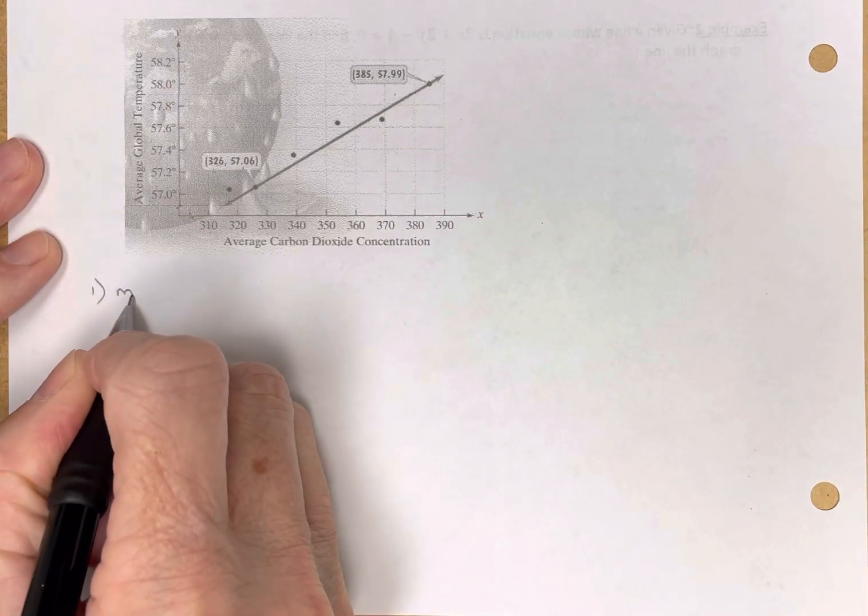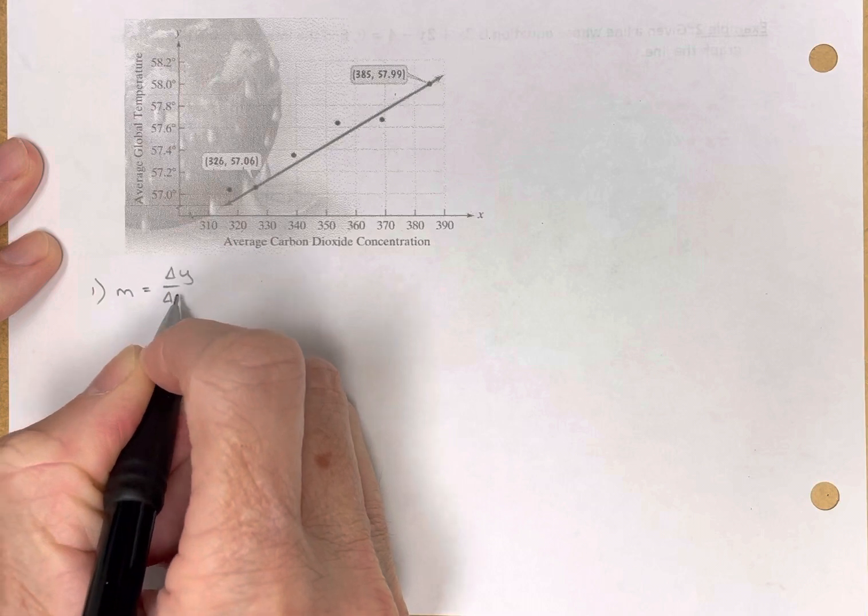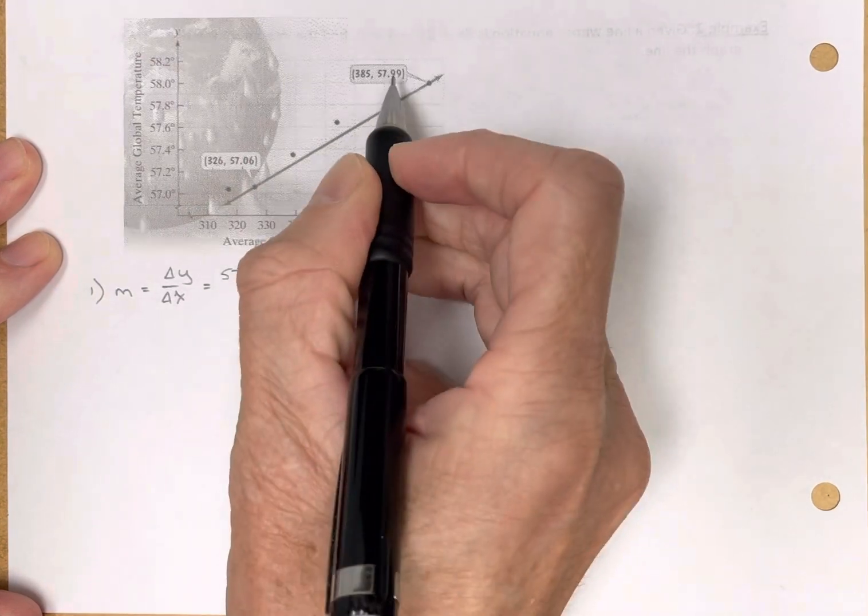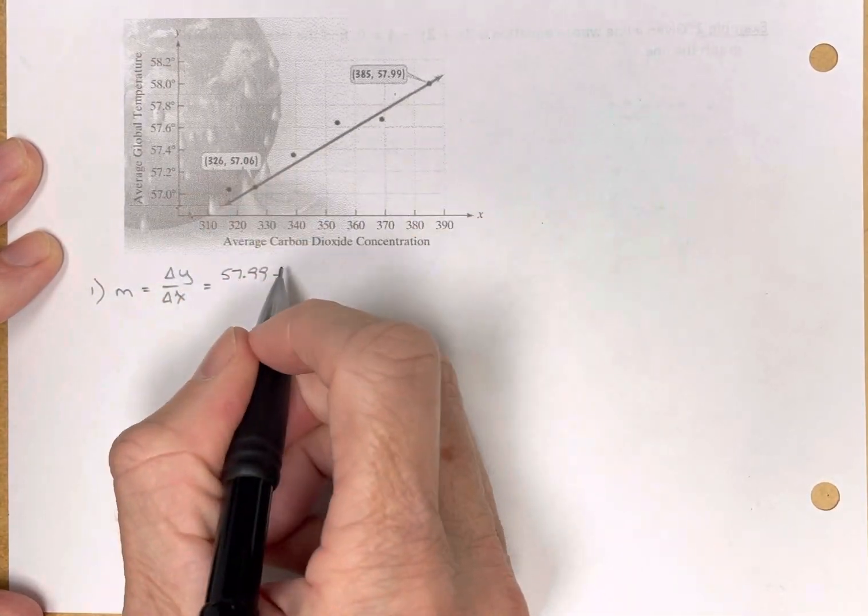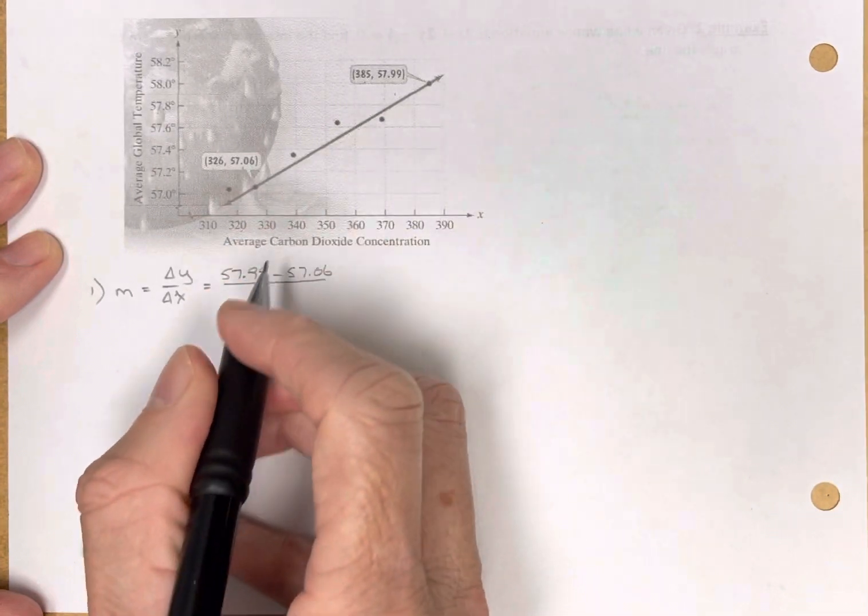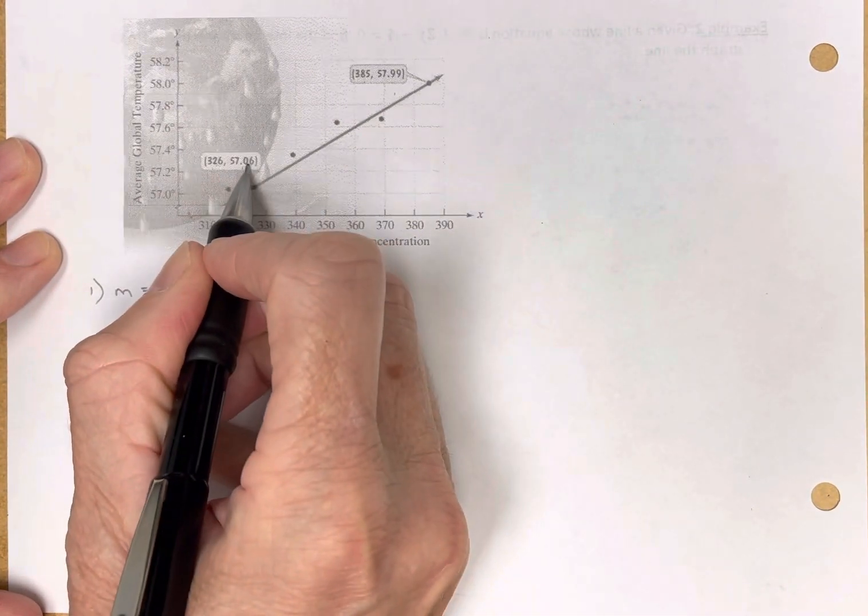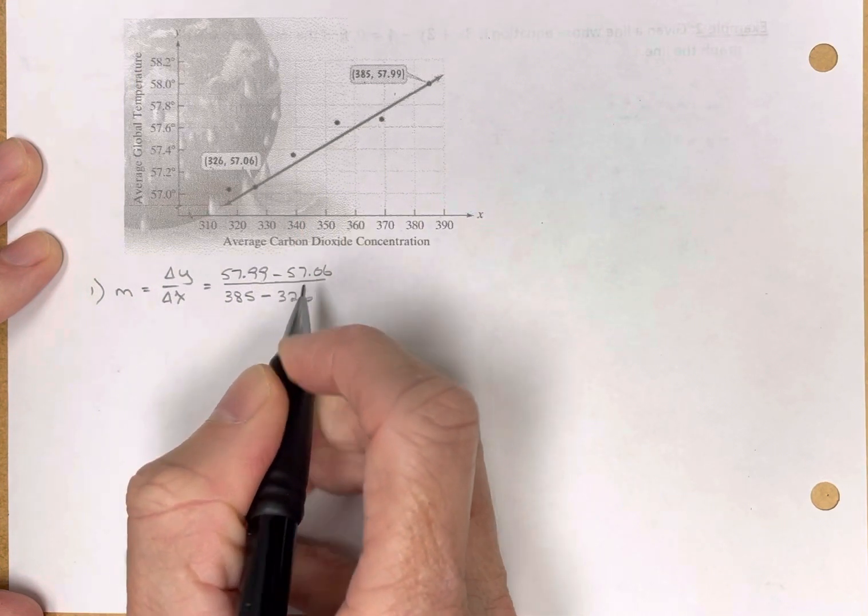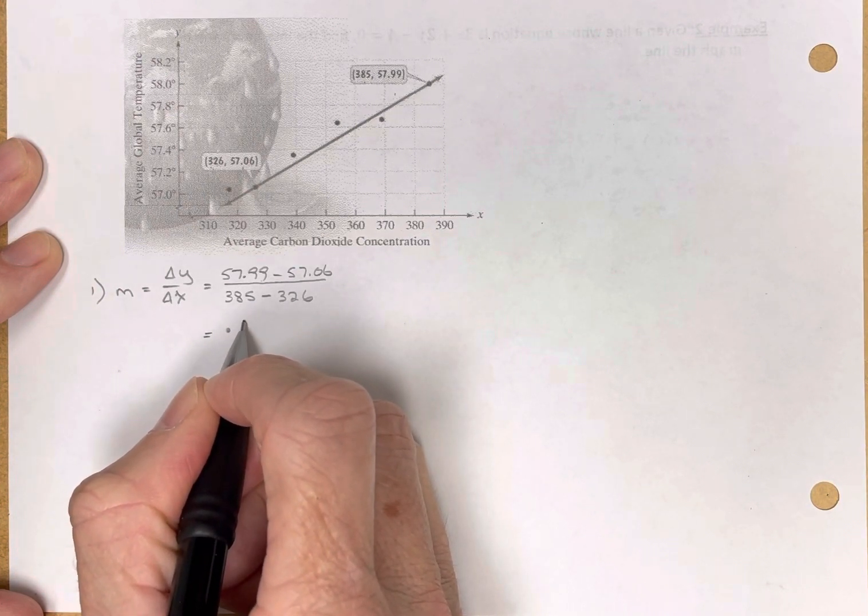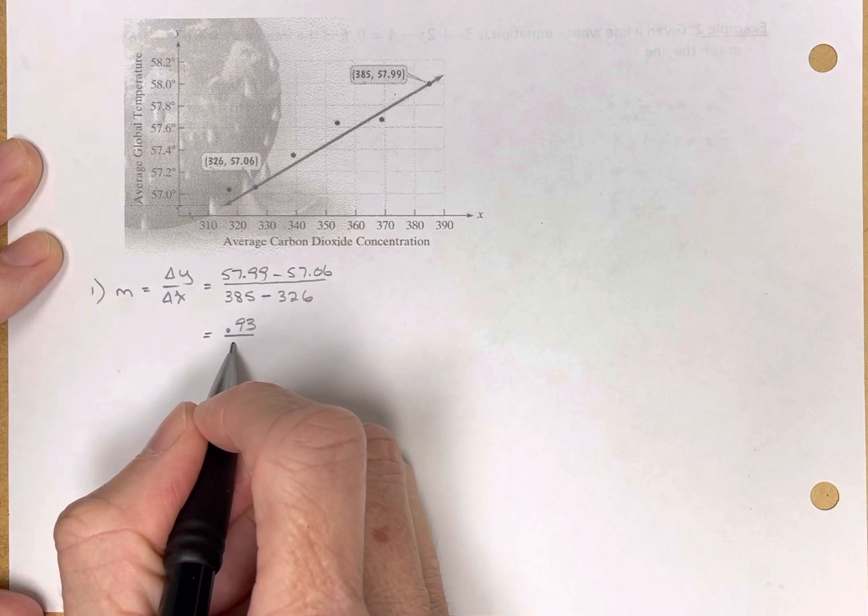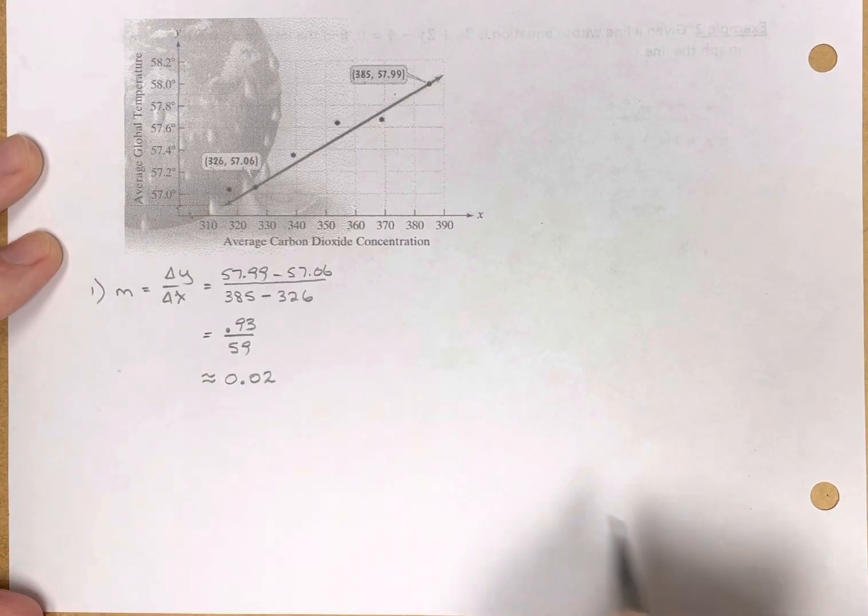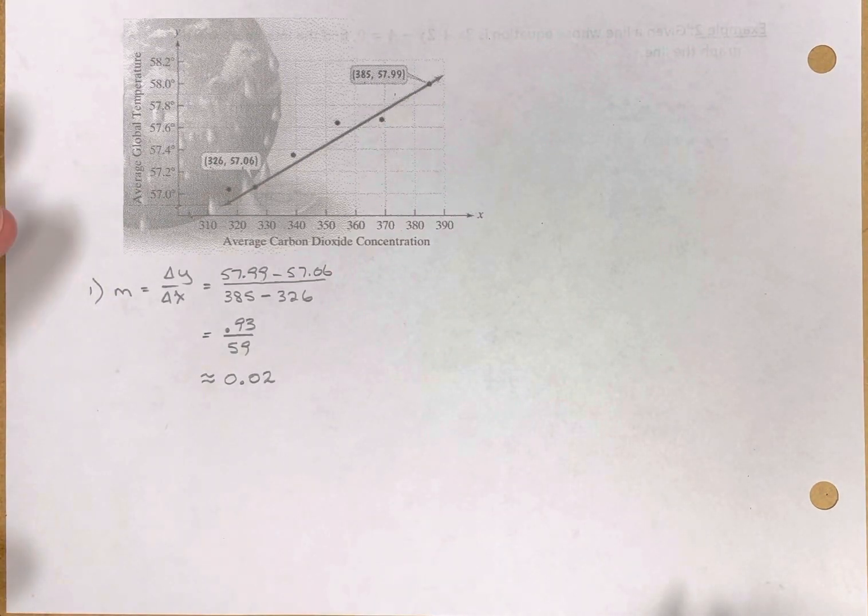So number one, the slope is the change in y over the change in x. We've been given two points, so let's use them. 57.99, there's the change in y, minus 57.06, divided by the change in x, 385 minus 326. That is equal to 0.93 divided by 59. If I do that division, the slope is approximately to the hundredth, 0.02, two hundredths.